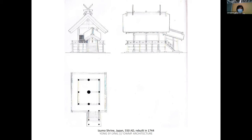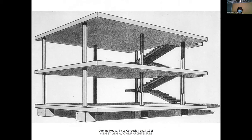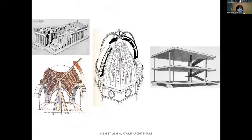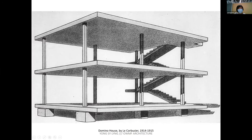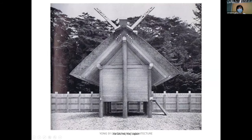In the modern era you have to know the Dom-ino House by Le Corbusier. This is a diagram, not a building. The material is reinforced concrete — just columns, a frame structure. You are no longer stacking brick by brick but moving into a post-and-beam structure where spaces are stacked. This is open, this is lightweight.